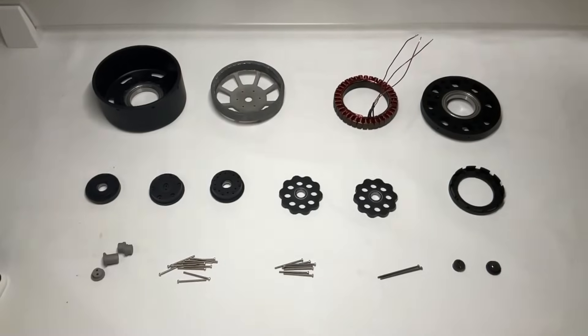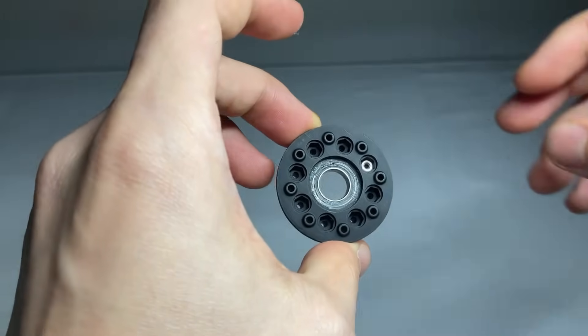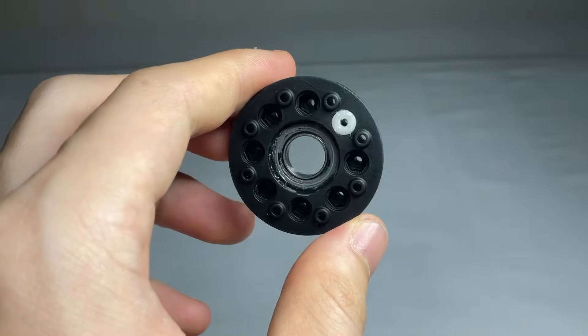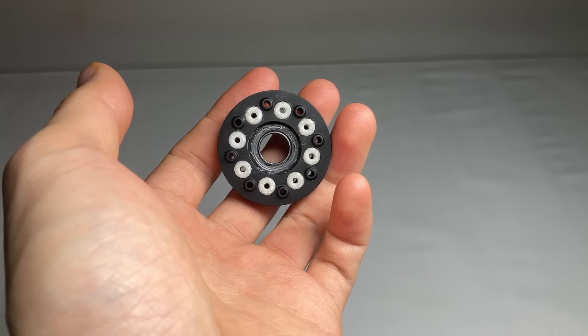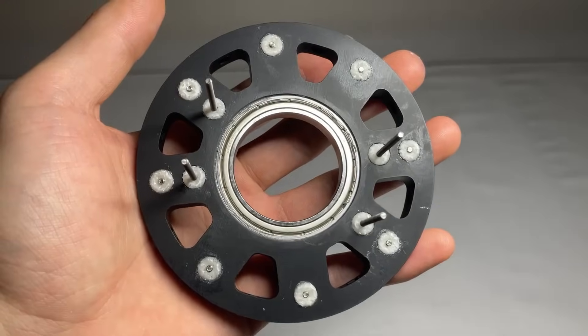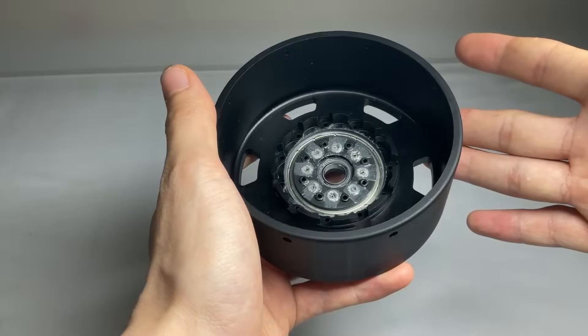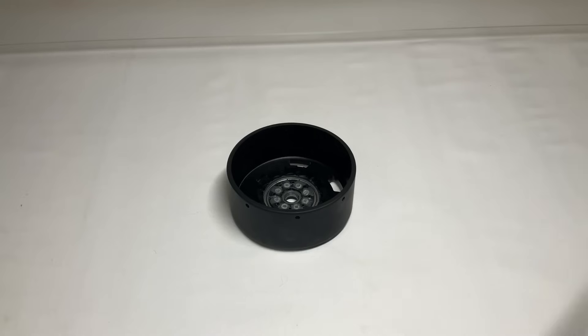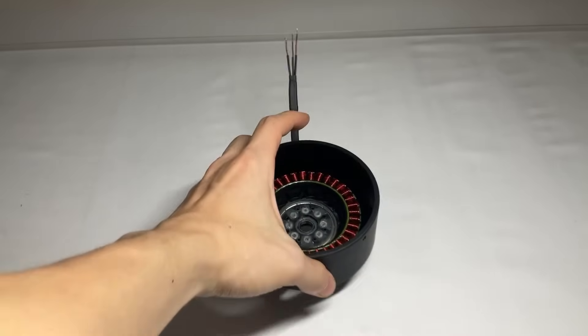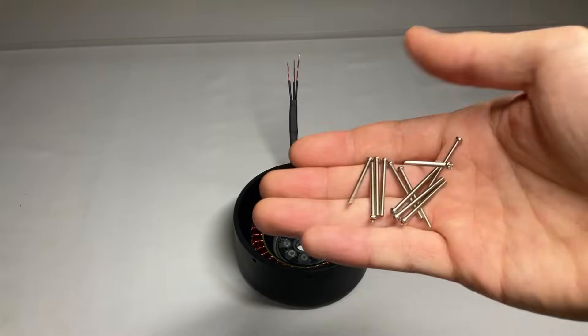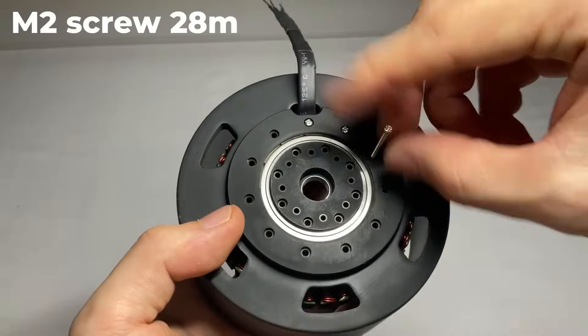Next, we'll assemble these components together. I'll embed some nuts into the output part so other components can be attached later. I'll do the same for this piece as well. Next, I'll attach the stator to the housing. Next, I'll install the screws to secure the bearings and other components.